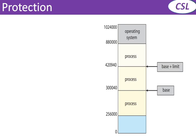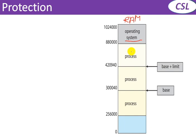Next, the concept is protection. In memory, there are different processes available. Including these processes, the operating system is also available. At the time of booting, part of the operating system is loaded into the memory. So in RAM, the operating system occupies some part and the remaining part is occupied by different processes. We need to discuss how processes are assigned to memory addresses and how these addresses are protected.